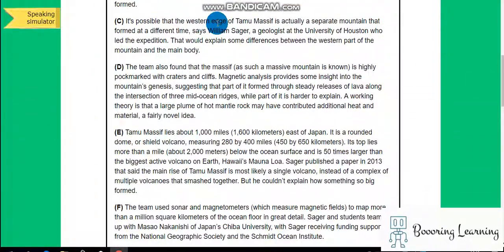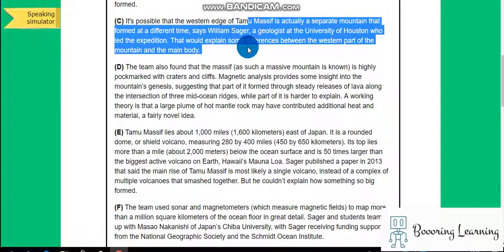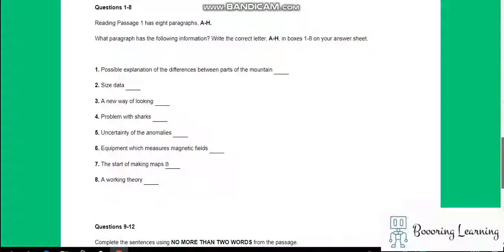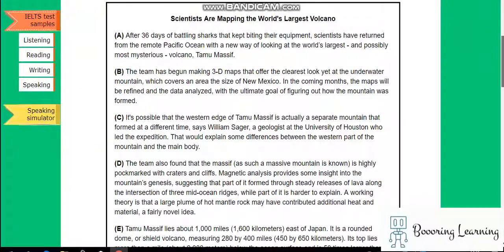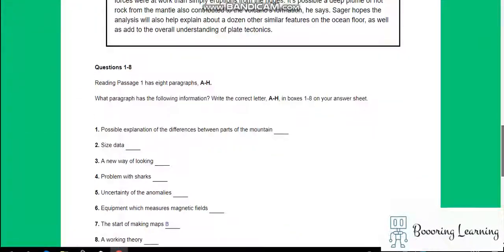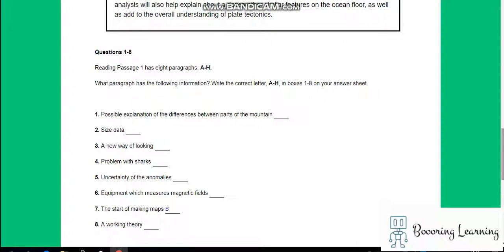It is possible that the western edge of Tamu Massif is actually a separate mountain that formed at a different time. A geologist at the University of Austin led the expedition that will explain some differences between the western parts of the mountain and the main body. So it is C. Okay, possible explanation of the differences between parts of the mountain.